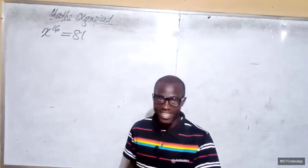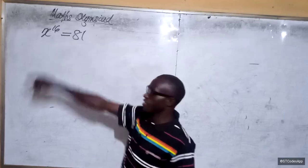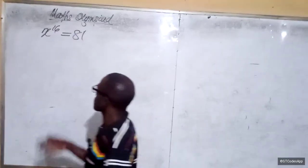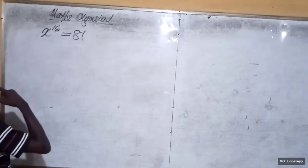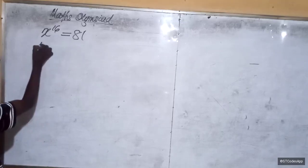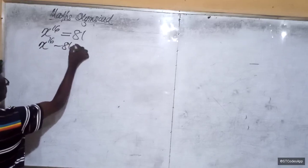Here we have x raised to the power 16 is equal to 81. It's very simple. What we want to do is bring this guy here so that it becomes x raised to the power 16 minus 81 is equal to zero.